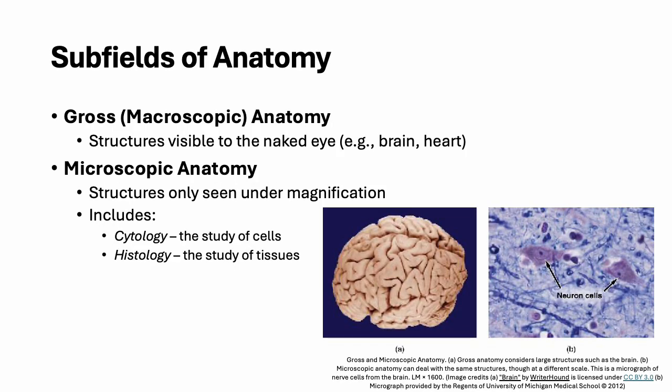Anatomy includes everything from what we can see with our eyes to what requires more powerful microscopes. Gross anatomy looks at large structures, while microscopic anatomy zooms into the cells and tissues, giving us insight into their roles and relationships.